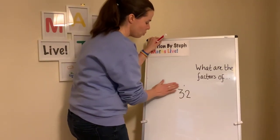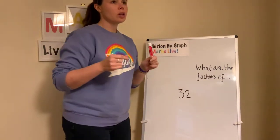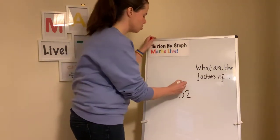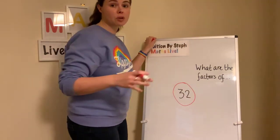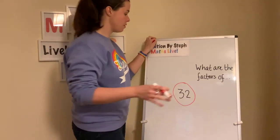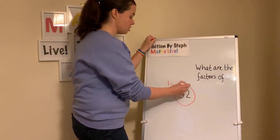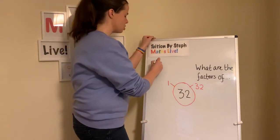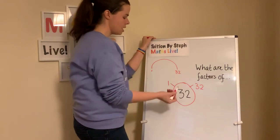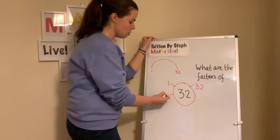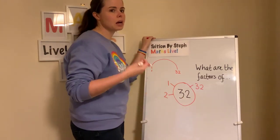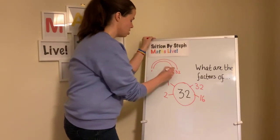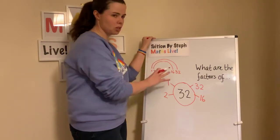So, factors of 32 — what that means is what numbers, what times tables is 32 in? I like to do a factor spider. I know a few of you do factor rainbows — it's very similar. So if I have 1 and 32 as my example, the rainbow is you do 1 and 32, like that. Then we know it's in the twos because it's an even number, so what do we times 2 by to make 32? That's 16. So you would do 2 and 16.